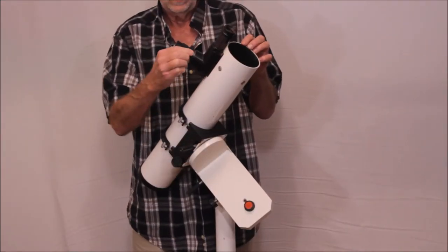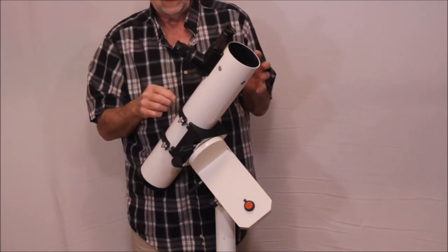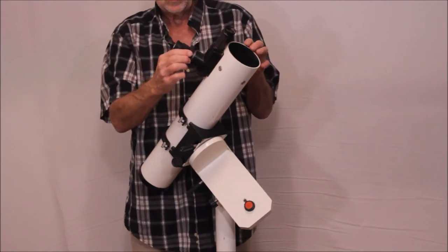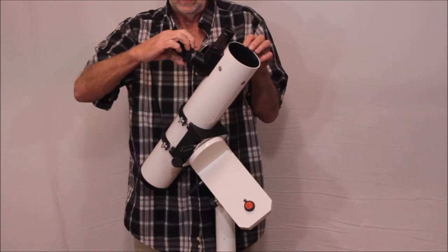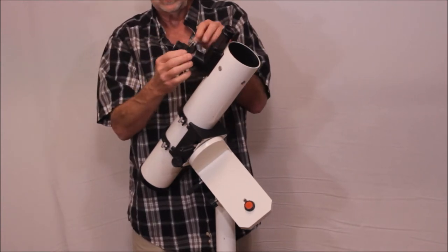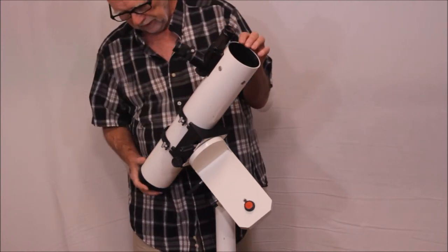Here's how you focus the eyepiece. This actually focuses both the finder and the main telescope. They're pretty much pretty close to being par focal so you don't have to mess with it. Once you get this set for infinity then you're pretty close to where it ought to be.